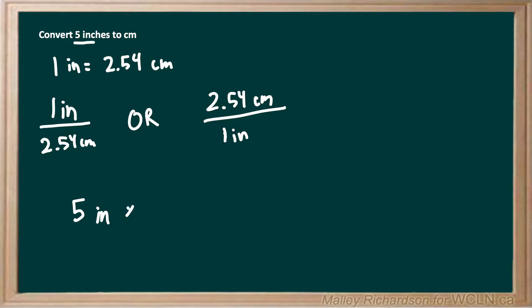And then we want to multiply that by one of our conversion factors. But we know that we want our answer to end in centimeters. So we want to get our units of inches to cancel out. So because 5 inches has inches on the top, we want to use the conversion factor with inches on the bottom.